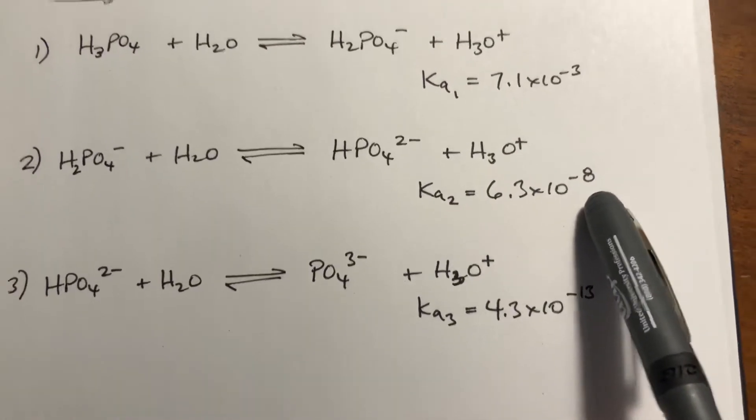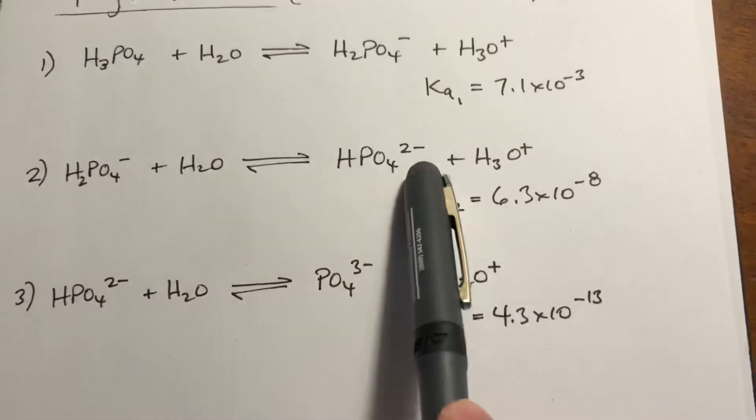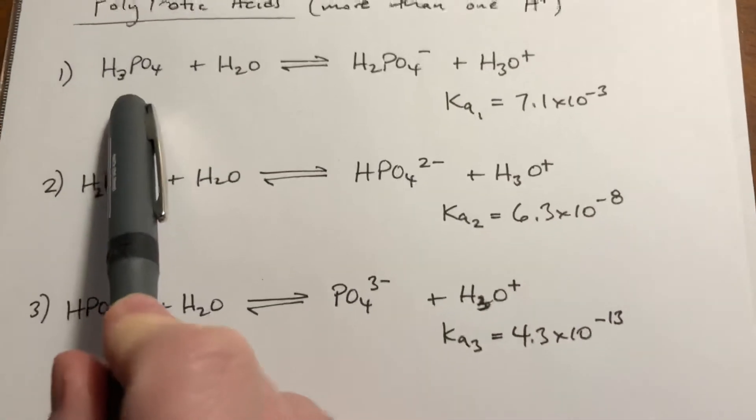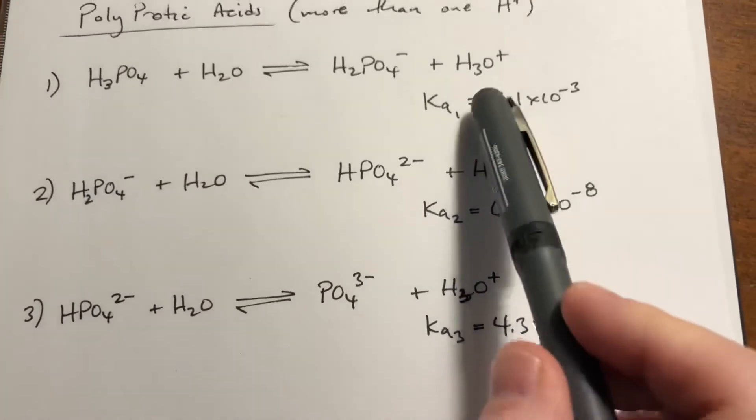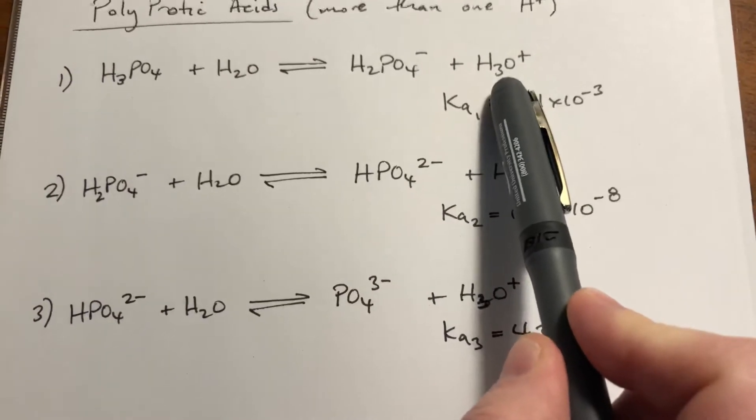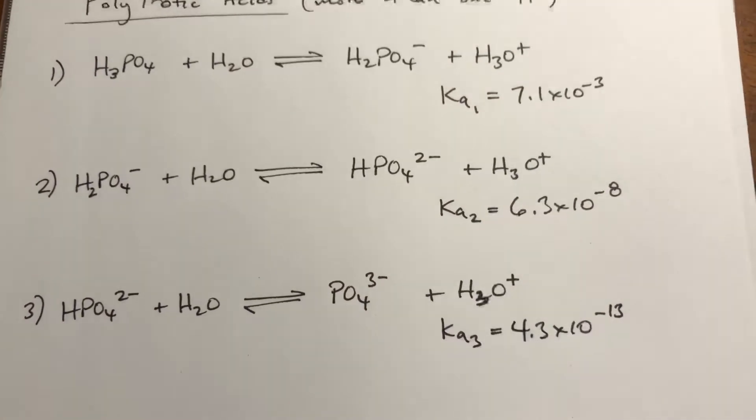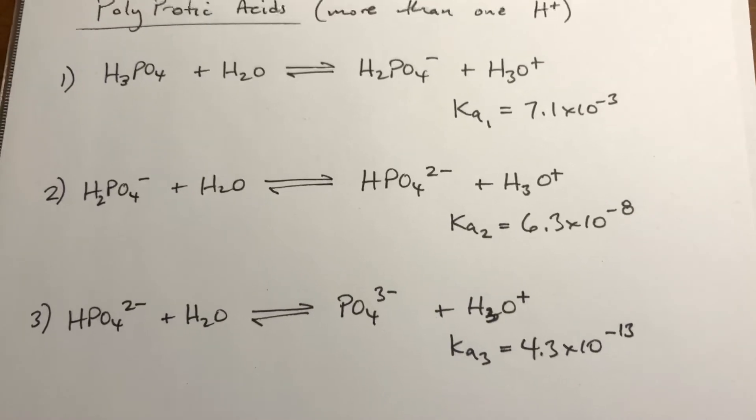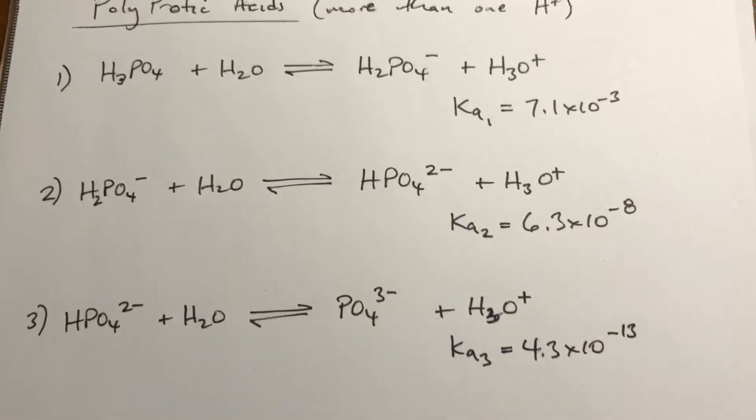That means for every, so if you had both of these reactions going on at the same time, in other words, if you threw this in water, for about every 10,000 of these, you would get maybe one of these, approximately. We're just talking orders of magnitude here, but 10 to the fifth is about 10,000.